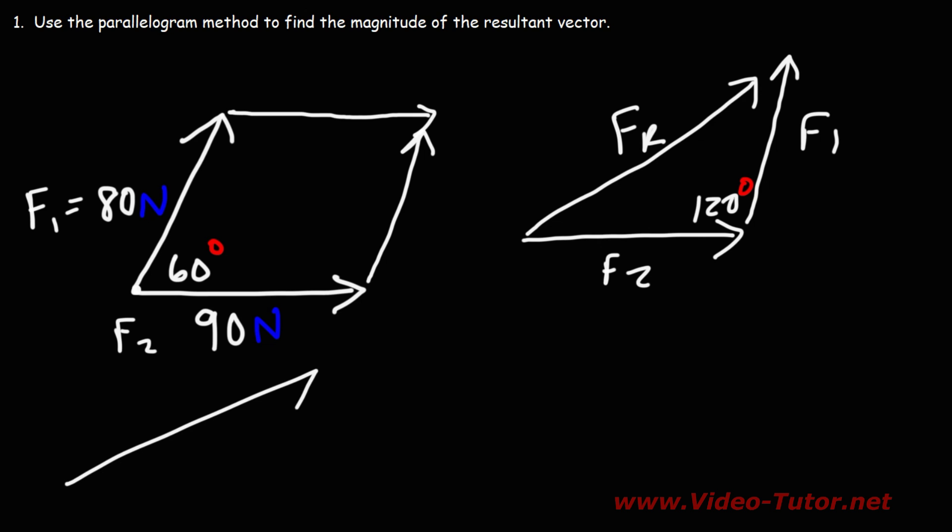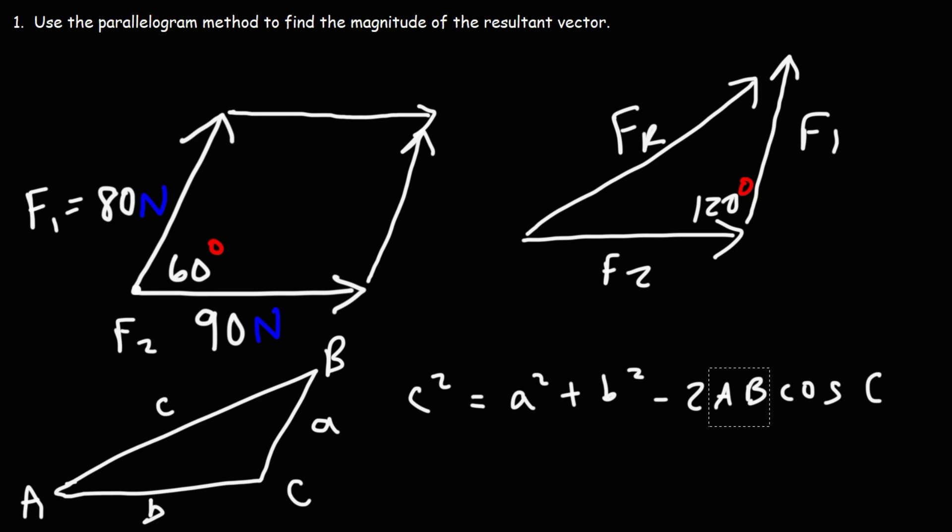Now just to recap, let's say if you have a triangle, this is angle A, angle B, angle C. Across angle A is side A, side B is across angle B, and side C is across angle C. So side C squared is equal to A squared plus B squared minus 2AB cosine of C. The capital letter represents an angle. The lowercase letters represent the side lengths.